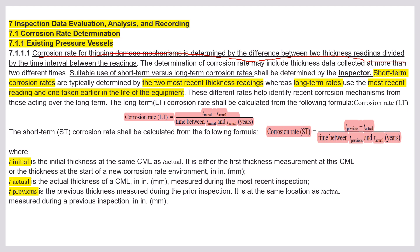For example, the initial thickness was 20 mm. After five years you find it became 15 mm. In five years it lost 5 mm, so every year it loses 1 mm. That 1 mm per year is the corrosion rate. Based on that corrosion rate we find the remaining life. If 1 mm is corroded per year and there is still 15 mm remaining, within 15 years all will be damaged.